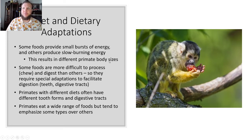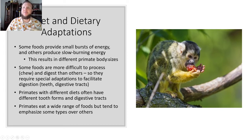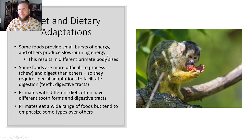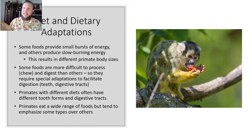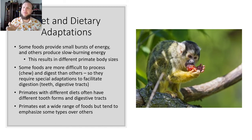Some foods are more difficult to process, which is why some folivores have a lot more muscle attachments. Primates with different diets often have different tooth forms and digestive tracts. Primates eat a wide range of foods but tend to emphasize some over others — like chimps, who eat pretty much anything including monkeys and other meat, but primarily rely on fruit.